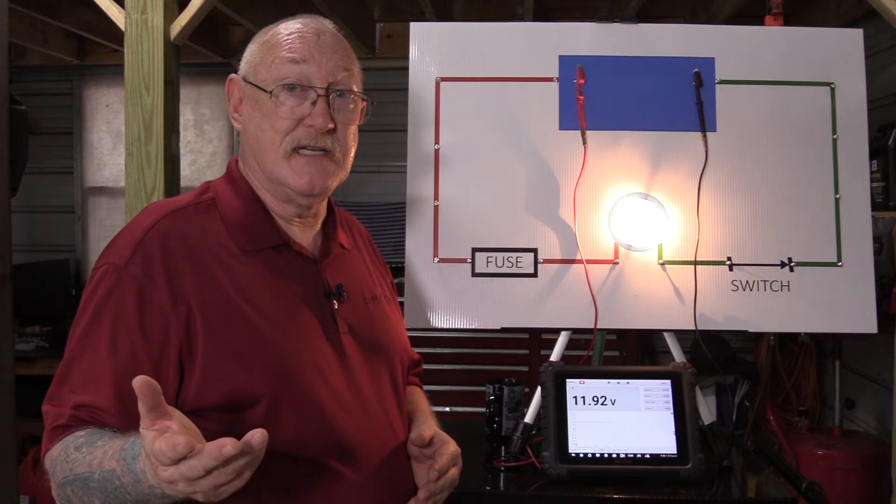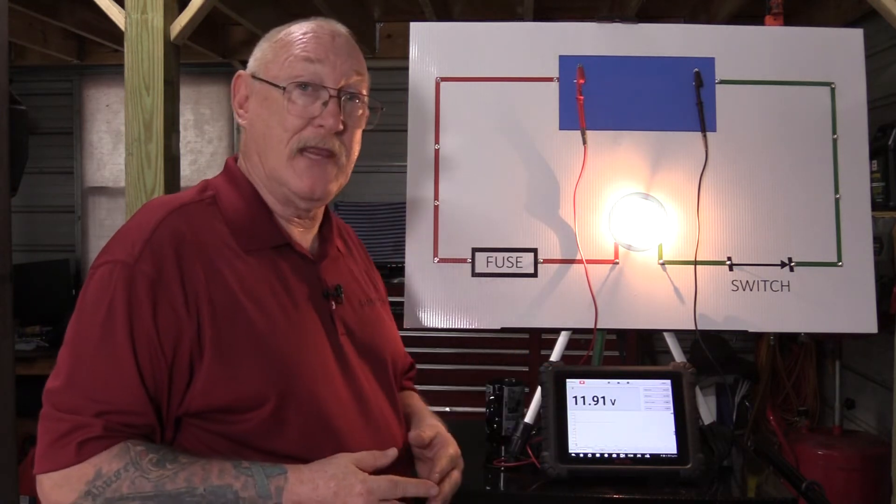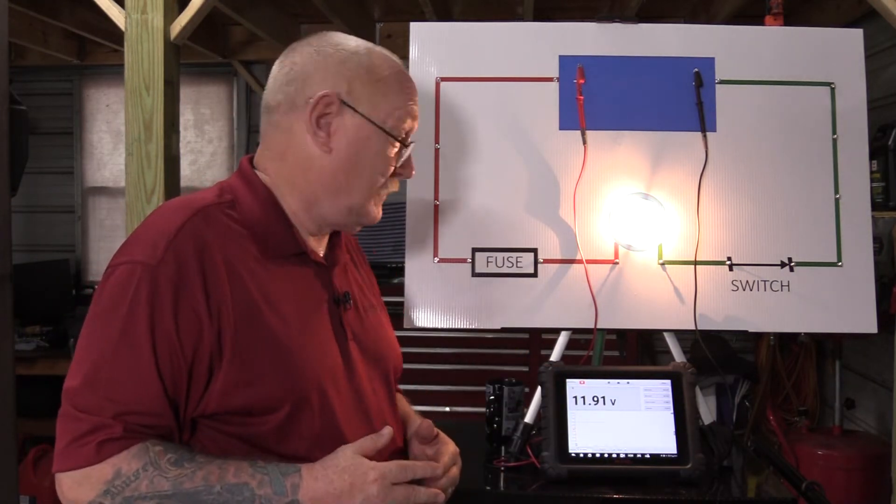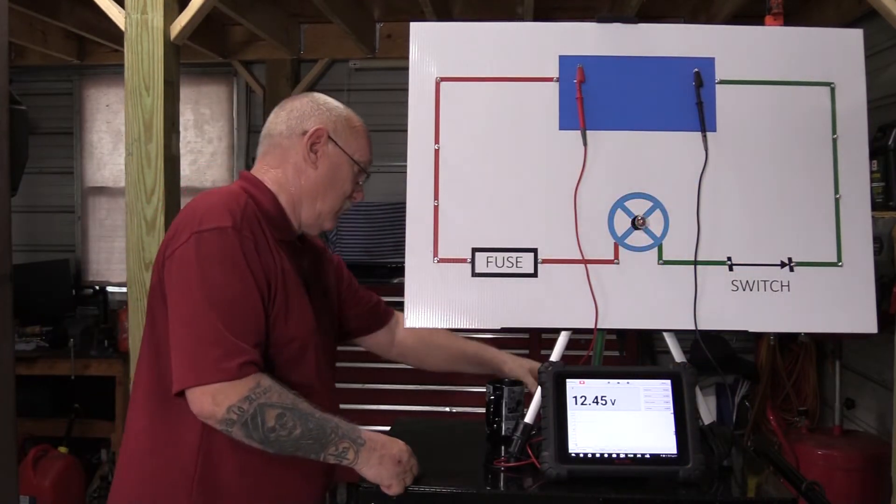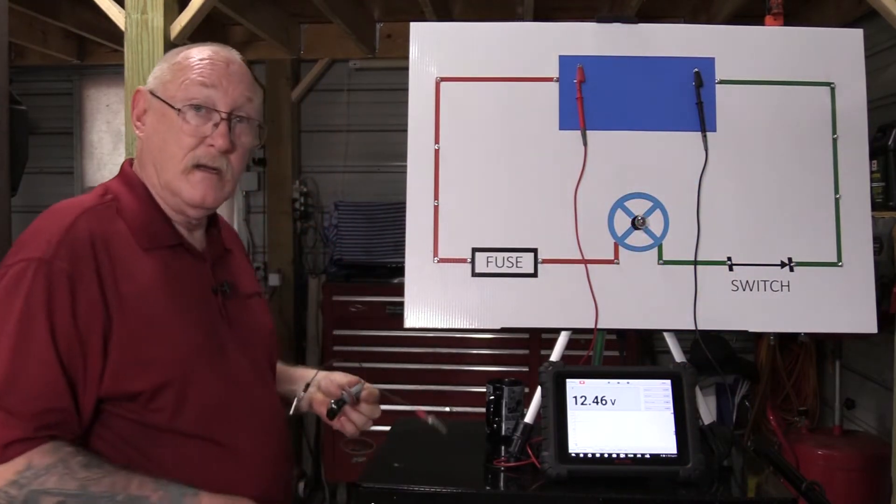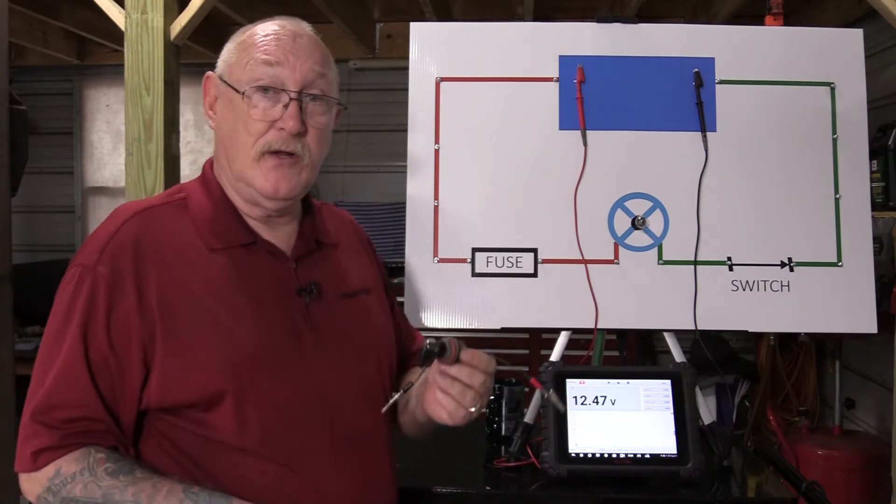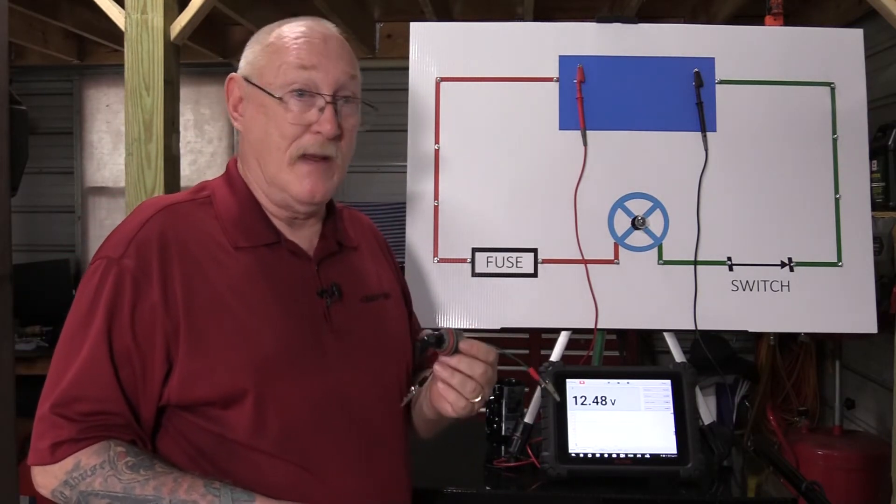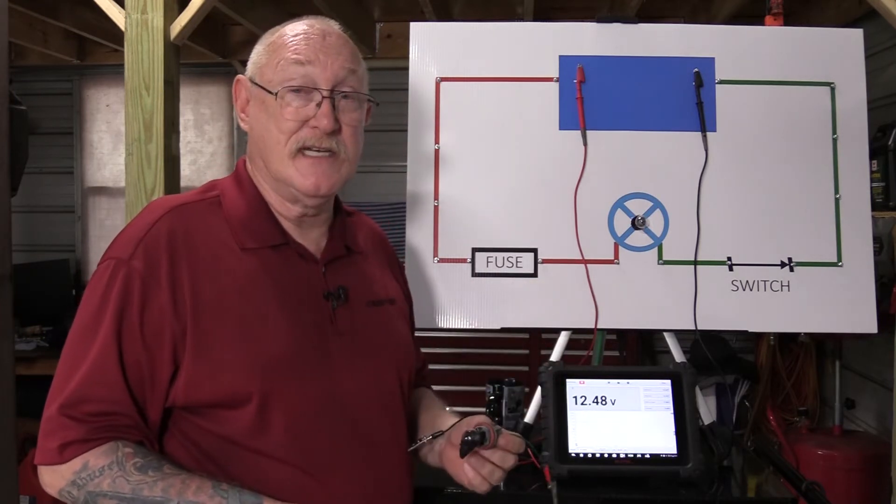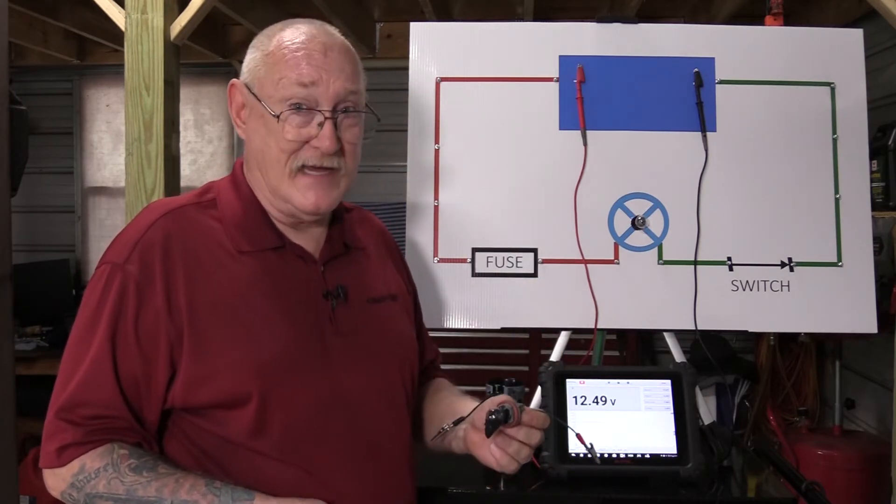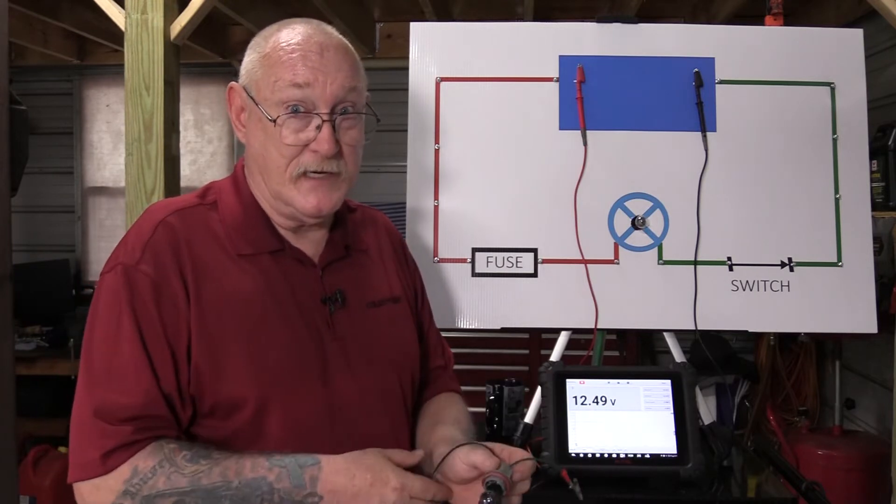Now, we say we add resistance and see if that 11.93 volts increases. Now, for the resistance, I'm going to use another light bulb. It's the same type of light bulb that's already in the circuit, which means I should be doubling the resistance in the circuit, right? If that's the case, I should see a huge increase in voltage.